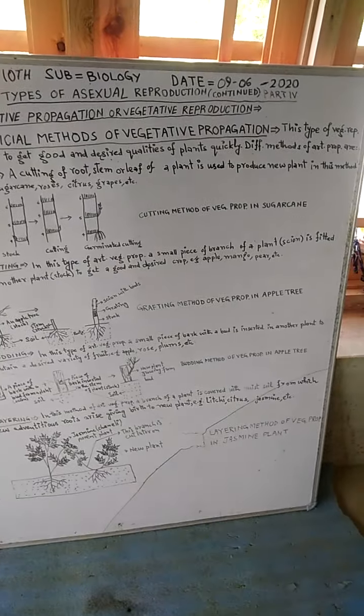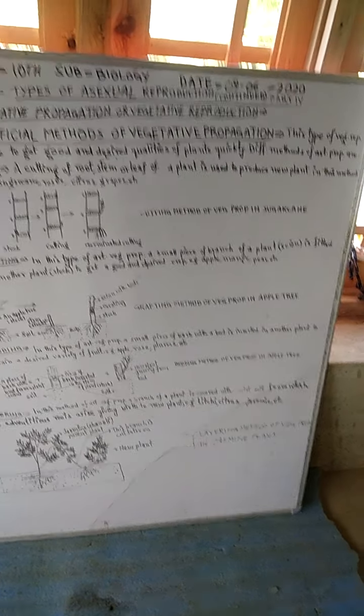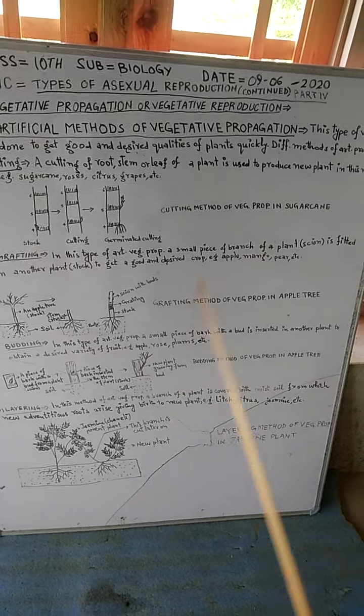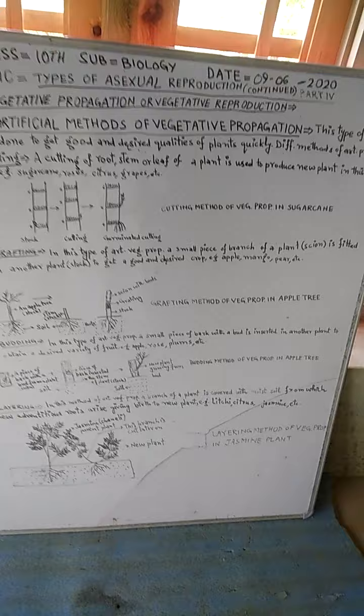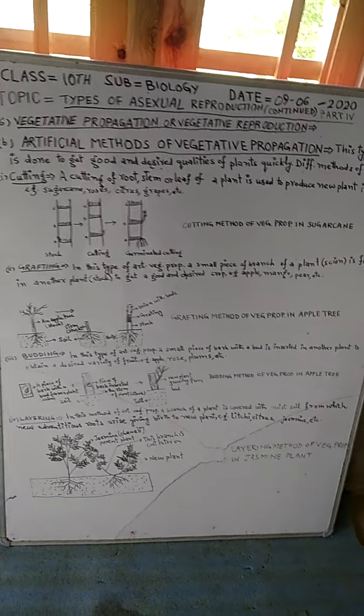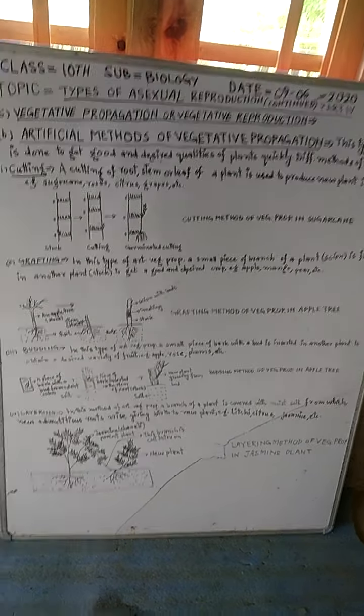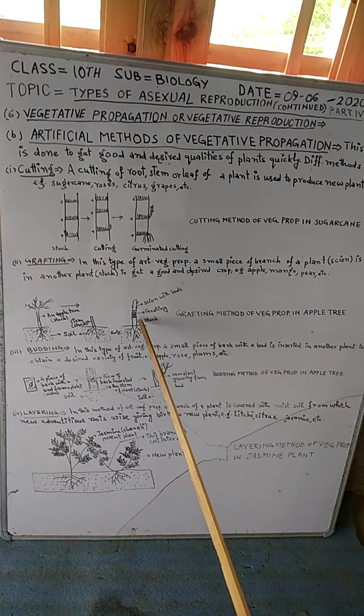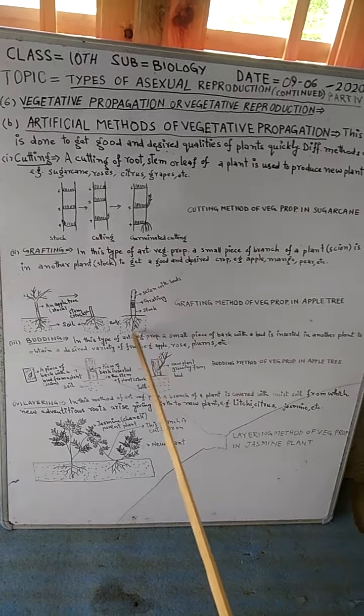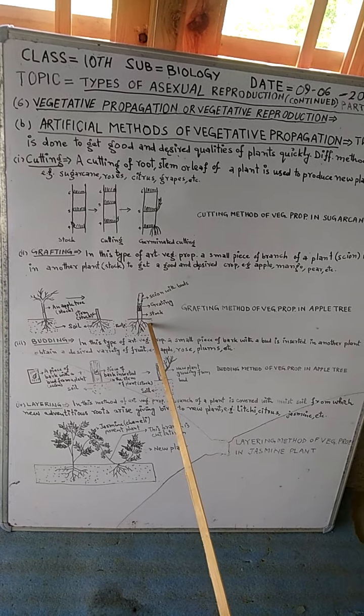A desired branch or a cut piece of a branch of another plant is taken which acts as scion. When it is adjusted in this plant,